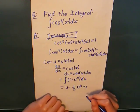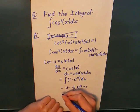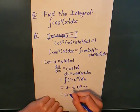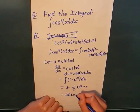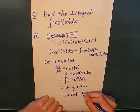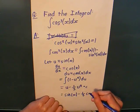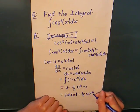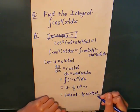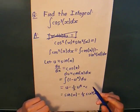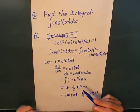So u is just sin(x). This equals sin(x) - 1/3 sin³(x). That was how to integrate by substitution.